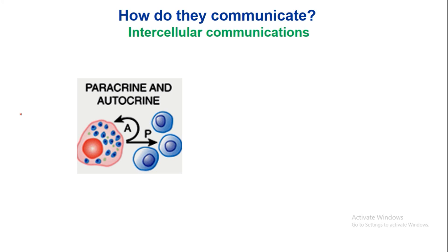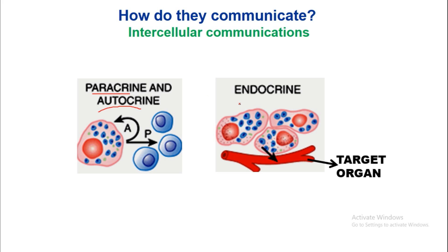How do cells communicate? The cell releases certain chemical substances into the extracellular environment. When these chemicals have an effect on the same cell from which they were released, it is known as autocrine or paracrine signaling. Second is endocrine — when a cell releases chemicals directly into the blood vessel, and via the blood they are transported to different target organs; this is the endocrinal function.